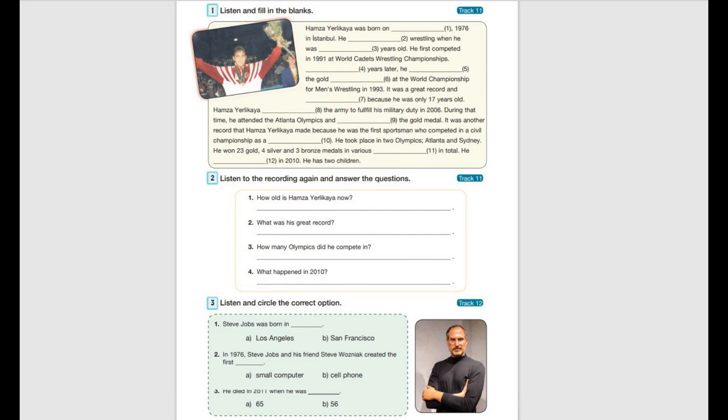Unit 3 Biographies, Page 43, exercise 1: Listen and fill in the blanks. Hamza Yelikaya was born on the 3rd of June 1976 in Istanbul. He began wrestling when he was 10 years old.